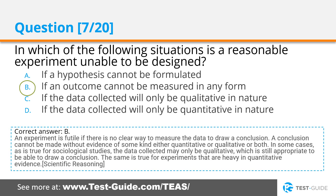Correct answer B. An experiment is futile if there is no clear way to measure the data to draw a conclusion. A conclusion cannot be made without evidence of some kind — either quantitative or qualitative, or both. In some cases, as is true for sociological studies, the data collected may only be qualitative, which is still appropriate to draw a conclusion. The same is true for experiments that are heavy in quantitative evidence.